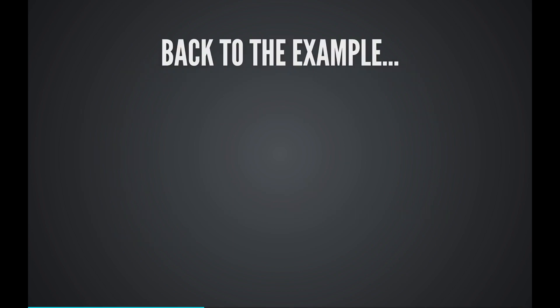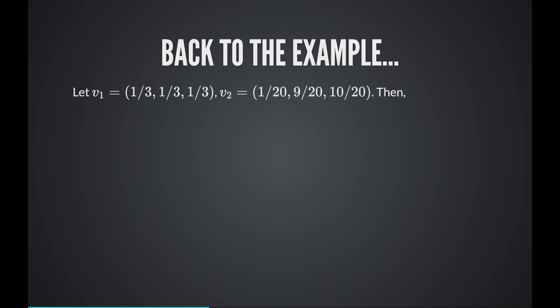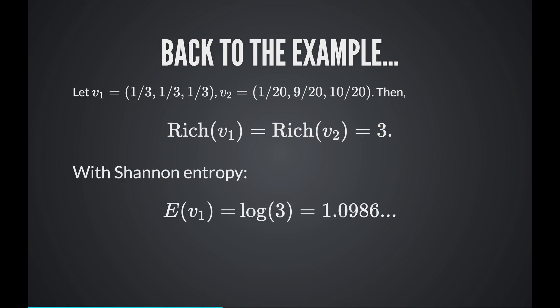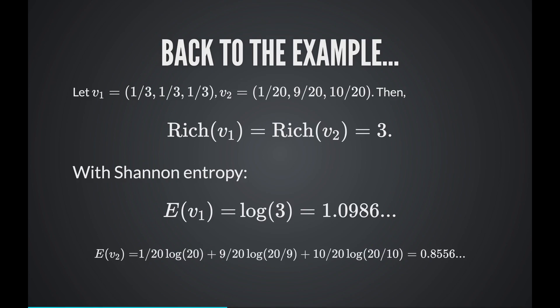Let's compute the Shannon entropy for our two vectors: three species equally distributed versus three species very unequally distributed. The species richness in both cases is three. The Shannon entropy of the first is log 3, which is approximately 1.0986. The Shannon entropy of the second is 0.8556. So Shannon entropy has captured the idea that diversity has decreased. Information theoretically, in the second example you know it's very unlikely to encounter the first species, so the entropy of the situation has decreased.